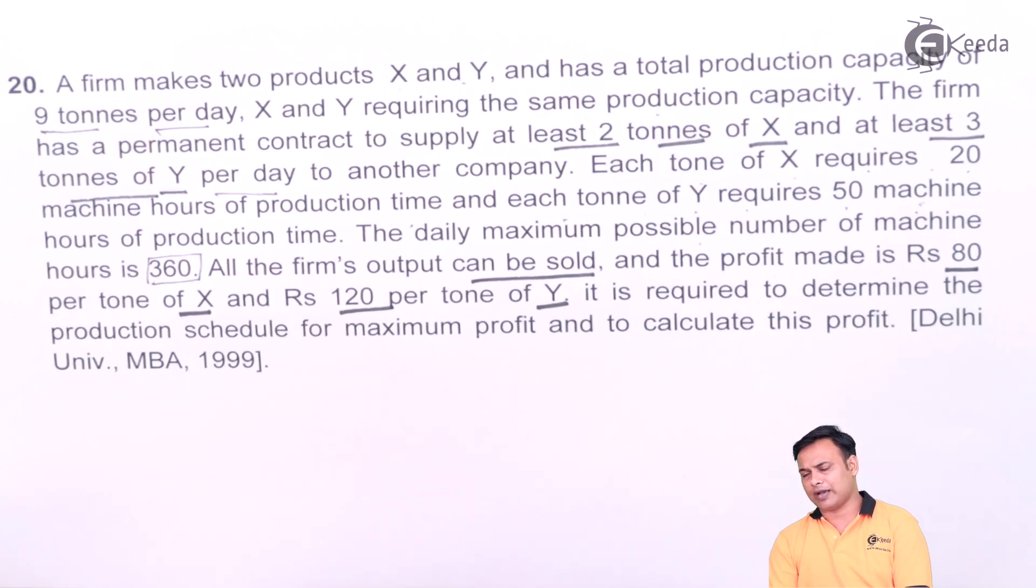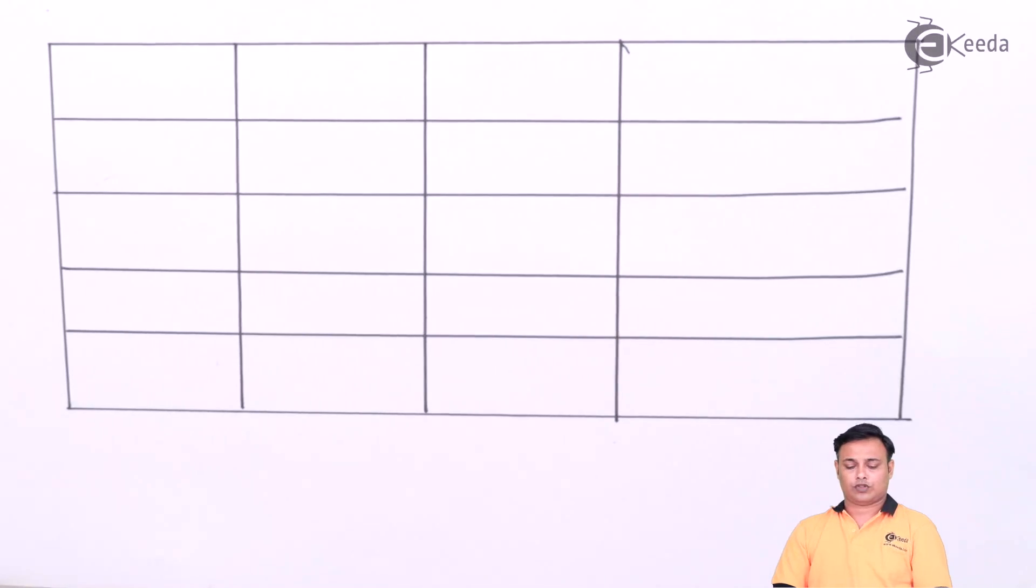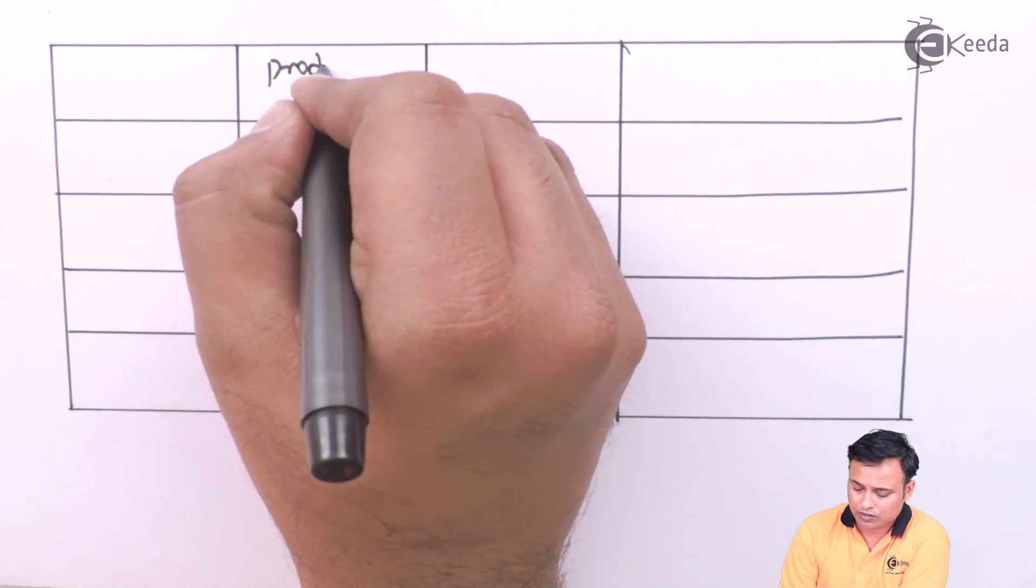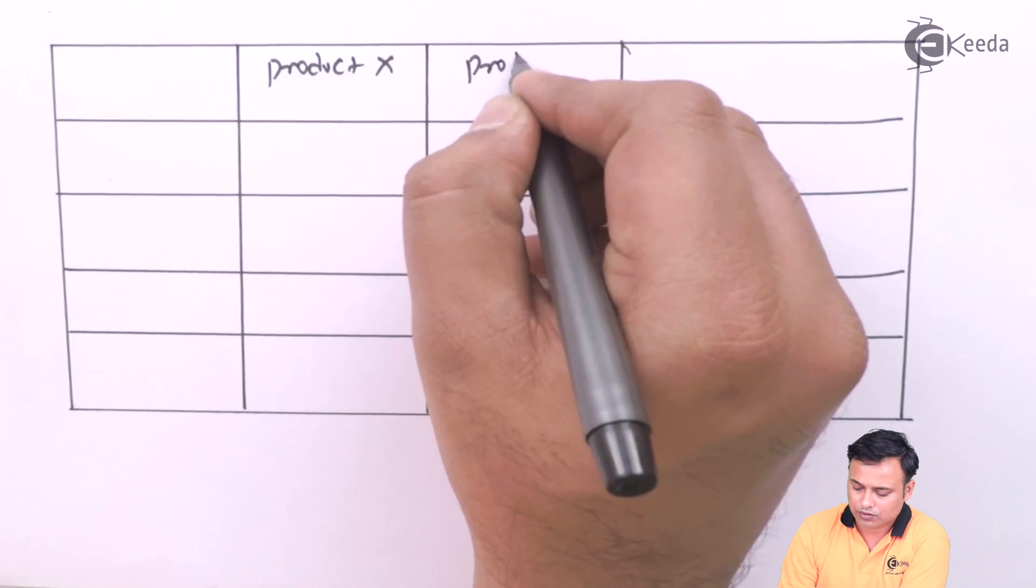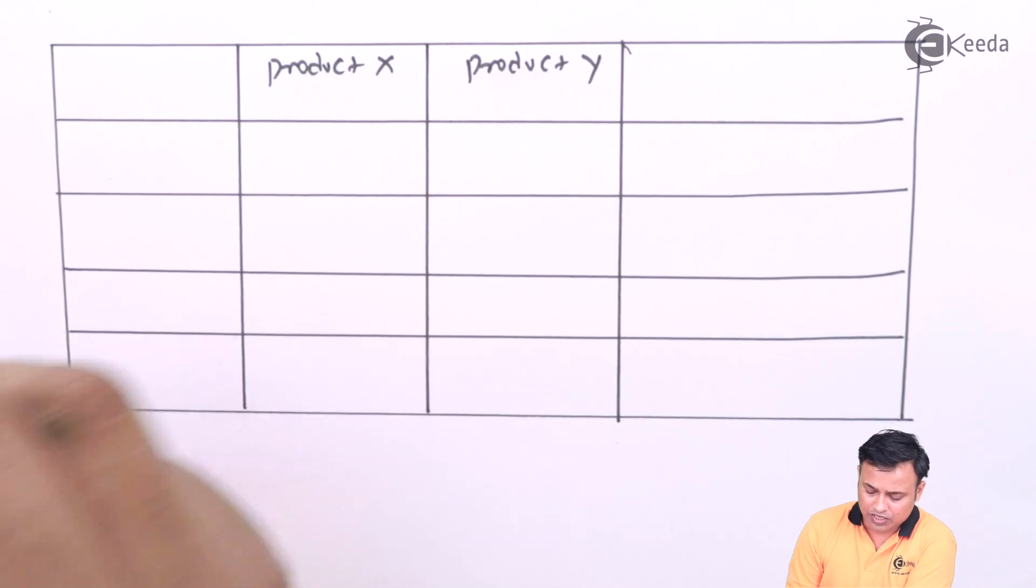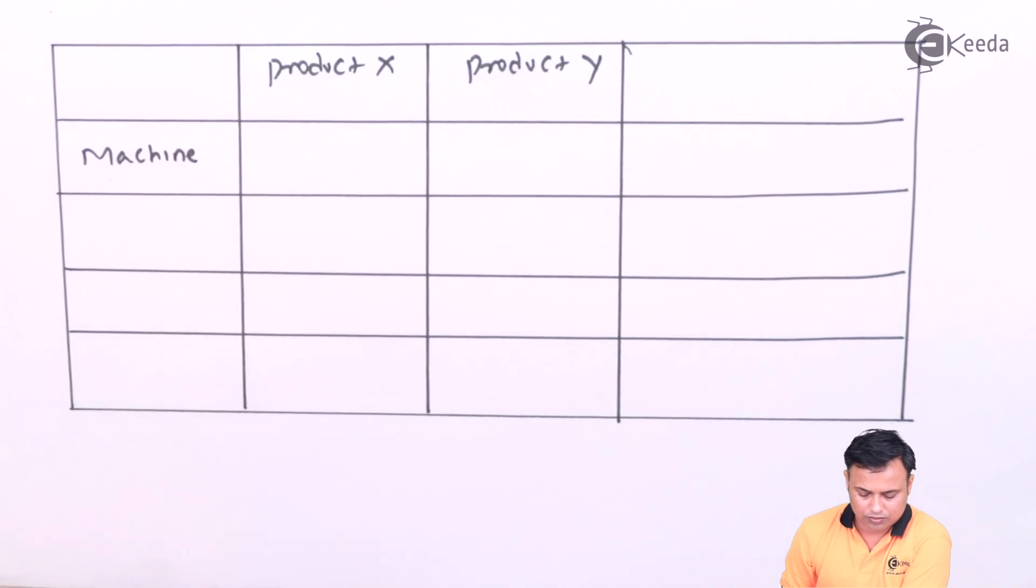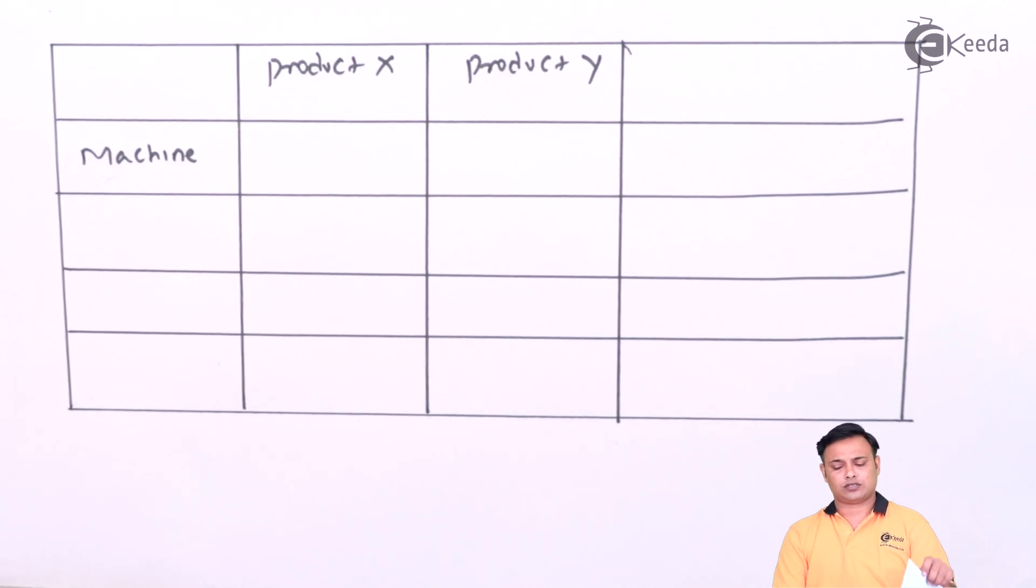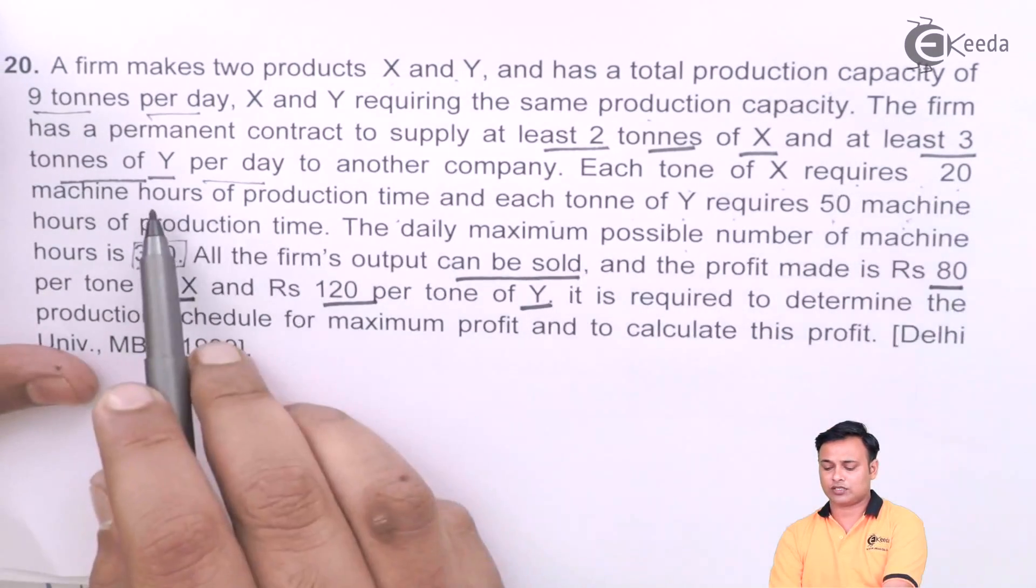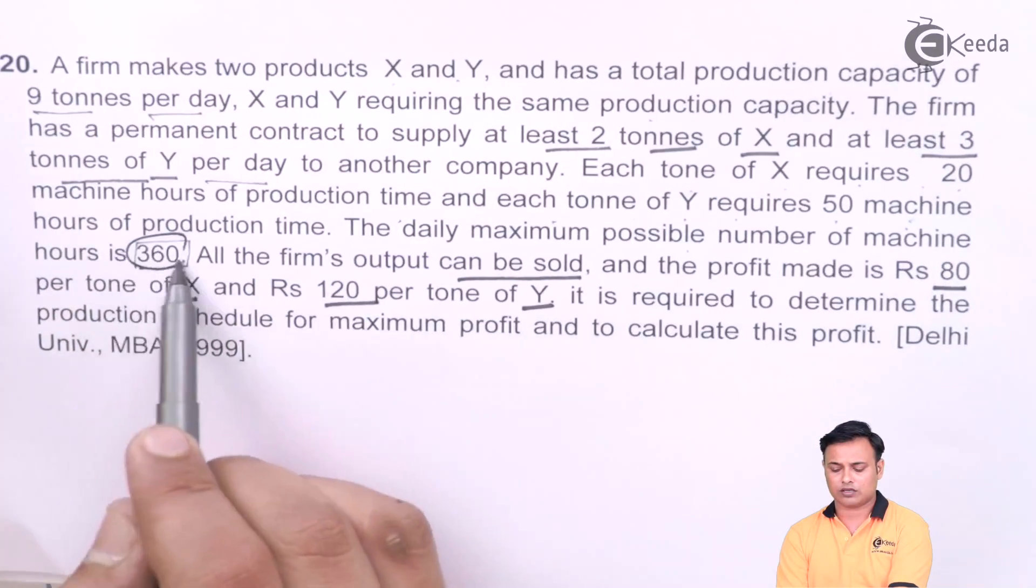Again we will first tabulate this into a table and then we will actually solve the problem. So here are my products, product X and product Y. Machine hours: each ton of X requires 20 machine hours and Y requires 50 machine hours and the total machine hours are 360.